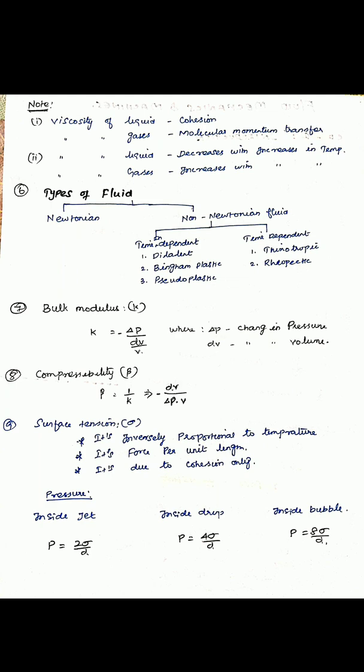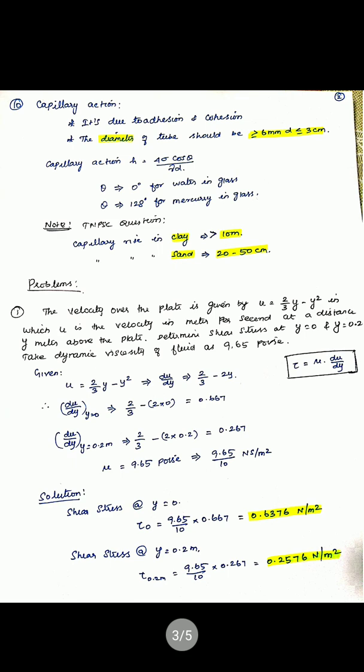Next, surface tension: it is inversely proportional to temperature; it is force per unit length and is due to cohesion only. Surface tension formulas — inside a jet: pressure equals 2 sigma by d; inside a drop: pressure equals 4 sigma by d; inside a bubble: pressure equals 8 sigma by d.